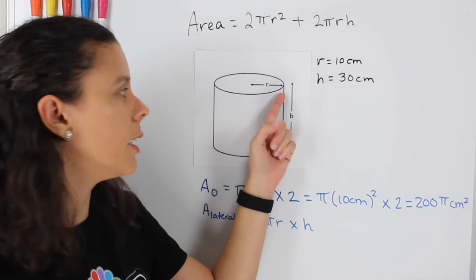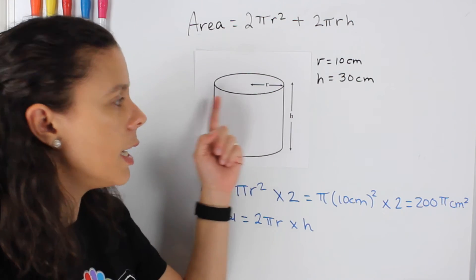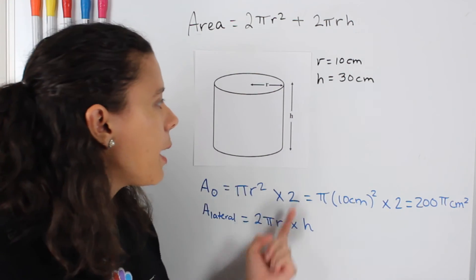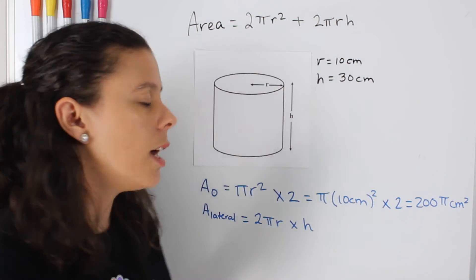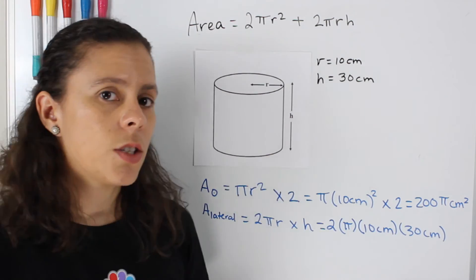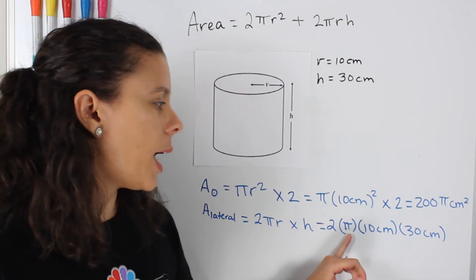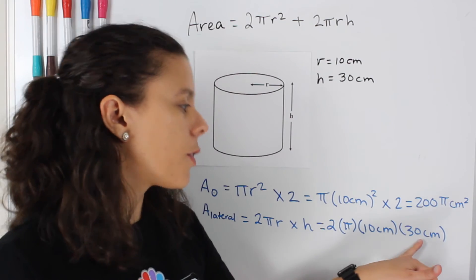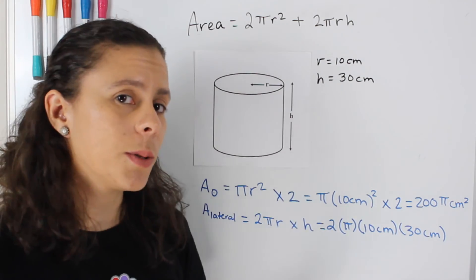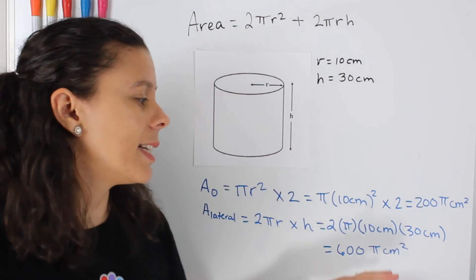which is in turn the length of the lateral side times the height. And that's going to give me the area of the lateral side. So we multiply 2 times pi times 10 centimeters times 30 centimeters, which is equal to 600 pi centimeters squared.